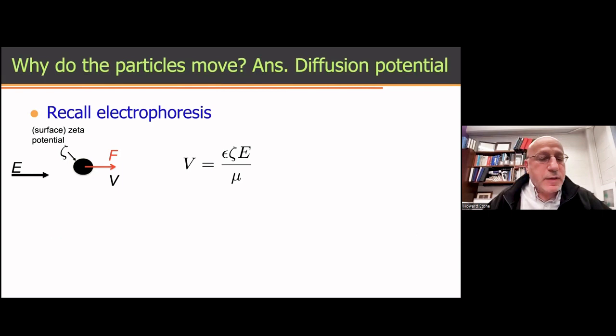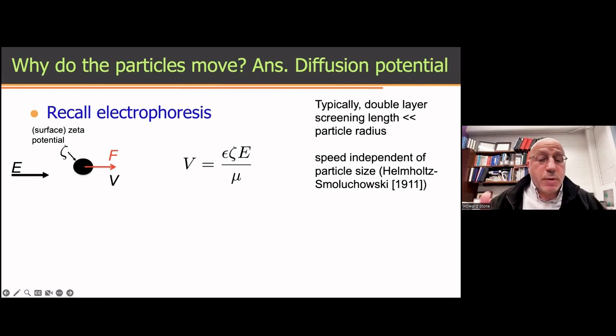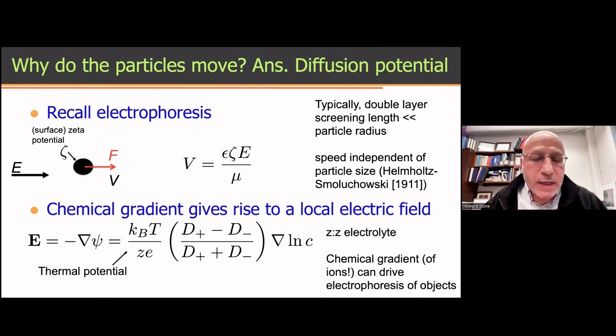Now, one way to think about this: if you had a particle with some surface potential, so-called zeta potential, and you apply a force F to it, then the particle will move at speed V. It's been known for a long time that the velocity V is linear in the electric field. And for thin double layers, that result is independent of the shape of the particle, a result known for a long time. And this electrophoresis result is basically at the heart of why most electrolyte systems, when there is a gradient in concentration, will cause particles to move.